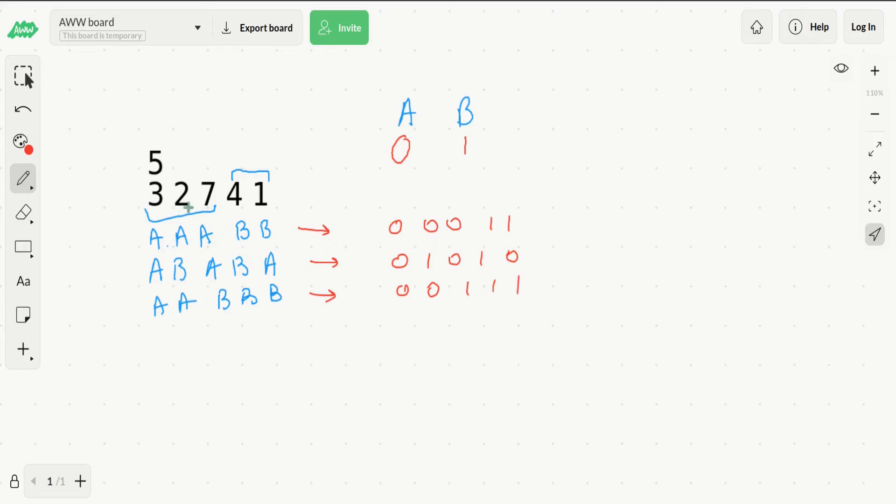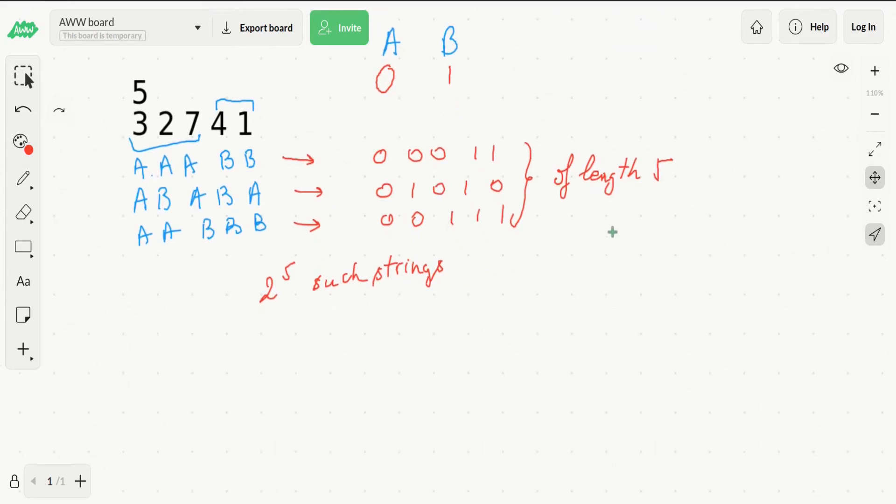Basically any assignments to groups A and B can be represented as a binary string of length 5. As we saw in previous problems, there are exactly 2 to the 5 such strings, and there is a bijection between the assignments and binary strings of length 5.